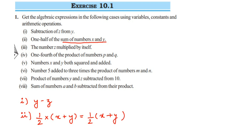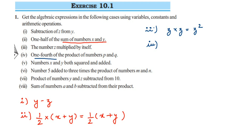The third question: the number z multiplied by itself. You are multiplying z by z, which equals z squared.